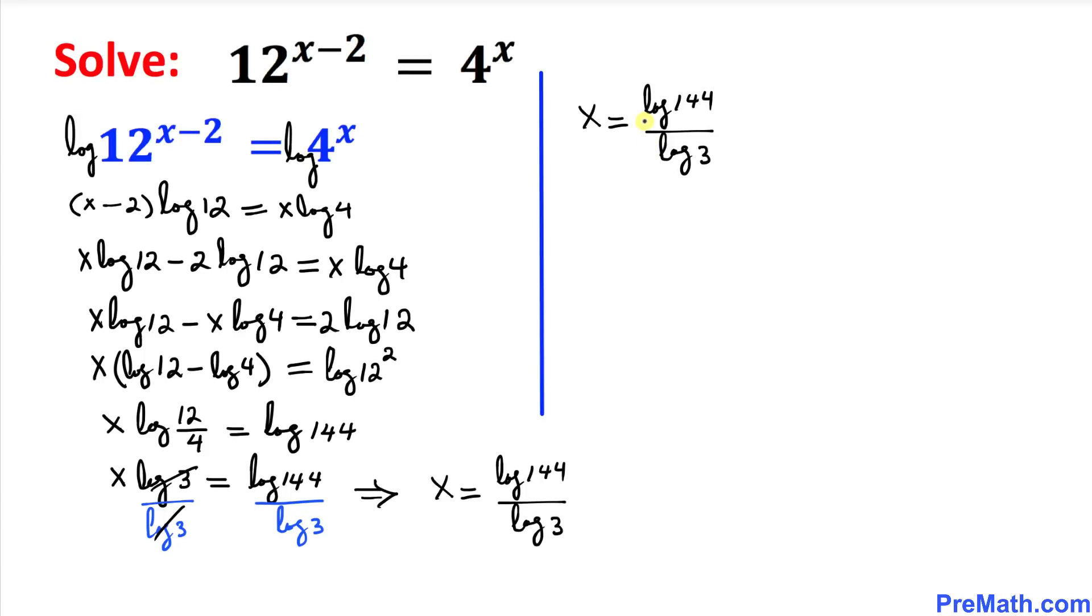And here I just wrote down x equal to log of 144 divided by log of 3 as we are running out of space on the left hand side. And now if we use a calculator, we can figure out the values. It turns out to be approximately equal to 4.5237.